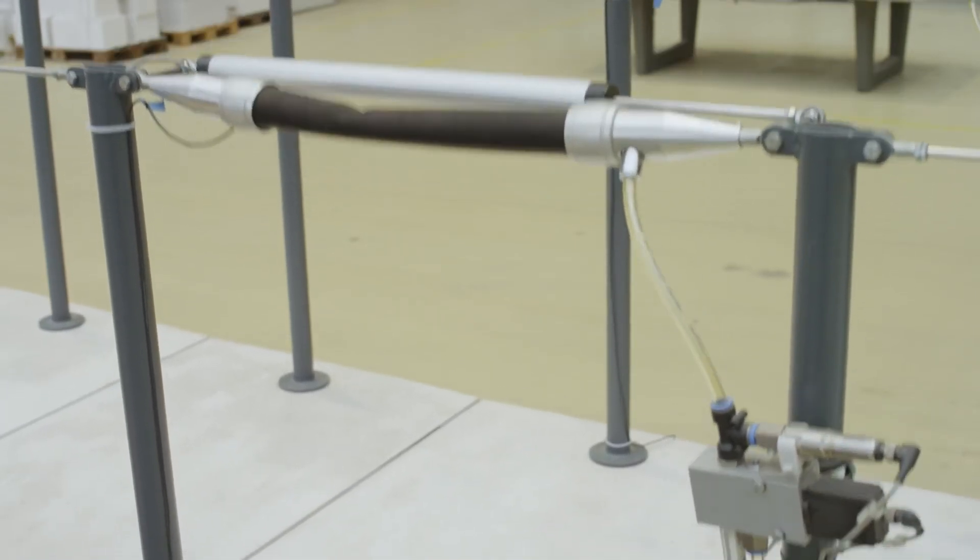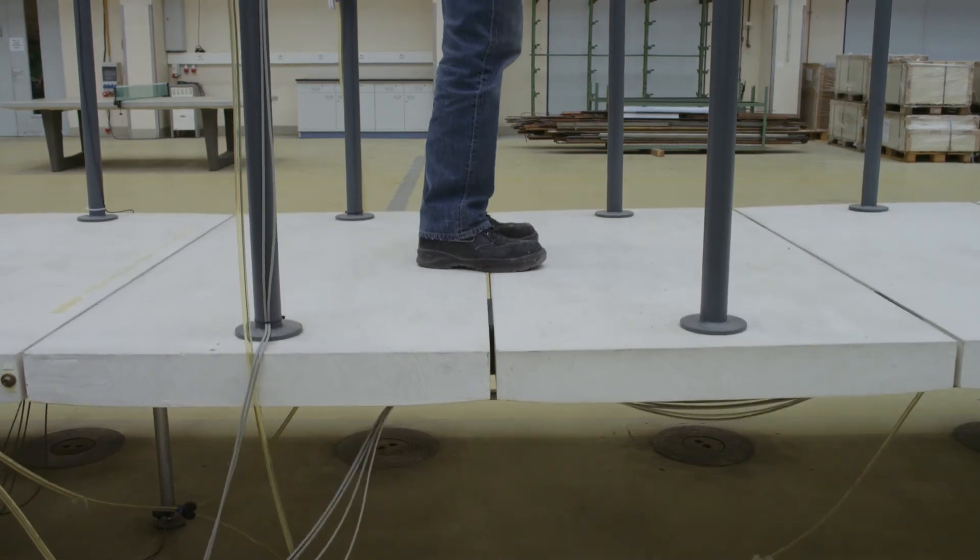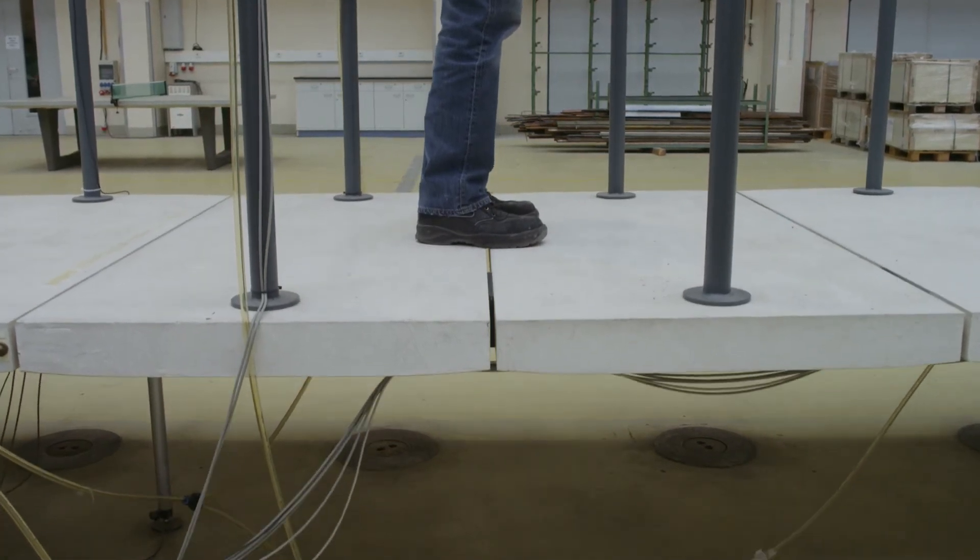We talk about pedestrian-induced vibrations and damping. When a person walks on the bridge, it makes it move, and when it stops, the bridge continues to move because there's very little damping.